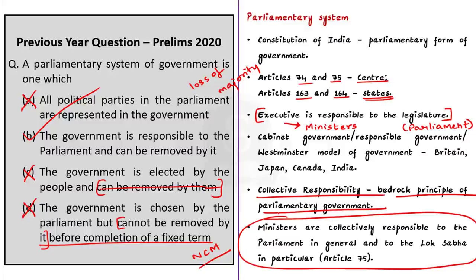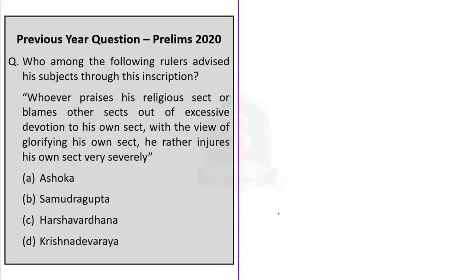The fourth question: Who among the following rulers advised his subjects through the inscription — 'Whosoever praises his religious sect or blames other sects out of excessive devotion to his own sect, with the view of glorifying his own sect, he rather injures his own sect very severely'? Options: A. Ashoka, B. Samudra Gupta, C. Harshavardhana, D. Krishnadevaraya. The answer is Option A — Ashoka.